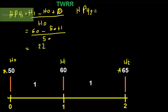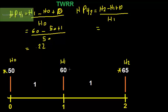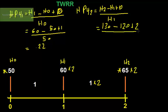HPY2 equals H2 minus H1, plus dividend, divided by H1. The value of the investment at the end of the second period is used here. The result gives us HPY2 equal to 10%. This confirms that time weighted rate of return is computed using the geometric mean.